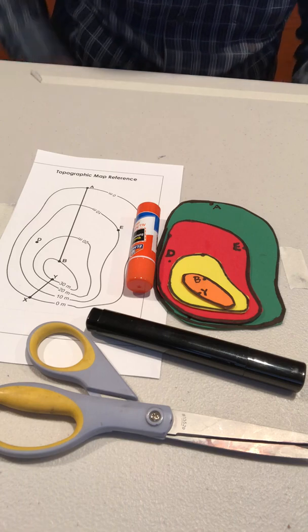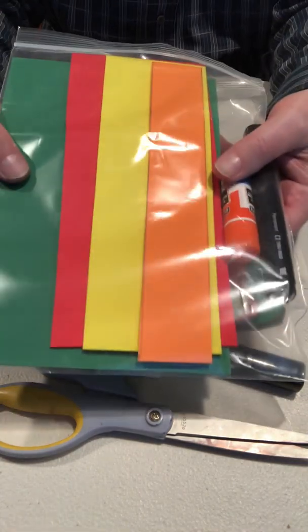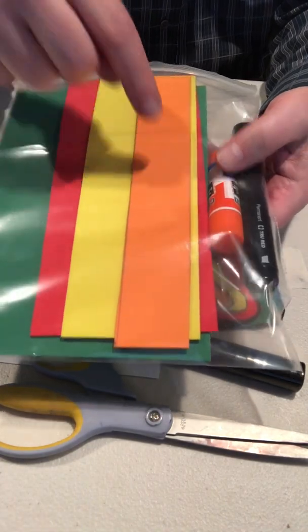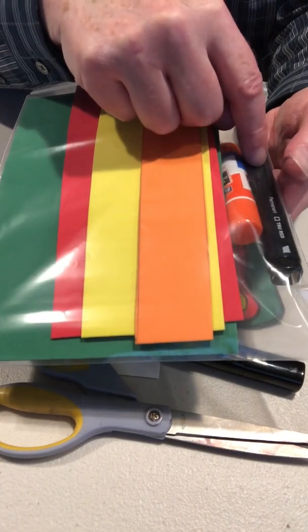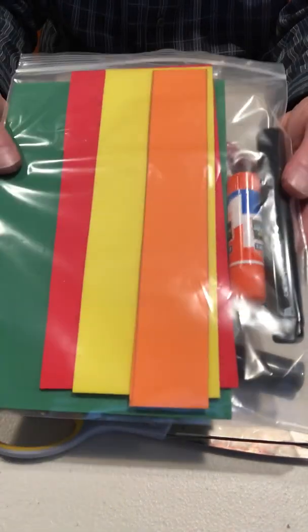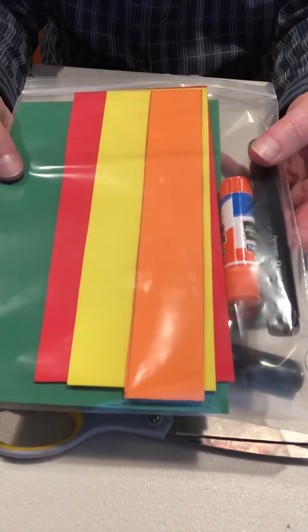Before the lesson, prepare the materials each student will need. They will need a piece of green foam paper, red foam paper, yellow and orange, each cut to a different size, a glue stick and a black marker, and then they'll be put into these zipper bags that are provided in the kit, and then they can be given to each student.